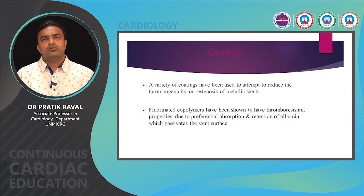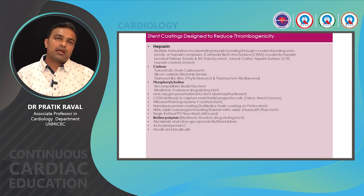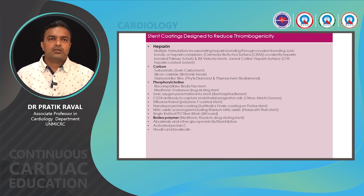A variety of coatings have been used in an attempt to reduce thrombogenicity or restenosis of metallic stents. Fluorinated co-polymers have shown very good thrombo-resistant properties due to their absorption and retention of albumin, which passivates the stent surface and reduces thrombin and platelet deposition. Various coatings have been tried including heparin, carbine, phosphorylcholine, CD34 antibodies, abciximab and other GP IIb/IIIa inhibitors, activated proteins, hirudin, bivalirudin, and others — however, all of these had very limited success.